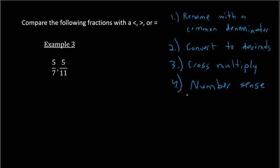Personally, I'd find that method 2 or 3 would be the simplest. If we convert to a decimal, we do 5 divided by 7, which gives us 0.714. Whereas 5/11 — if you do 5 divided by 11 — you get 0.4545 repeating. We can see that 0.714 is greater, so therefore 5/7 is greater than 5/11.